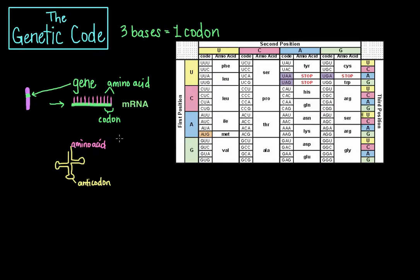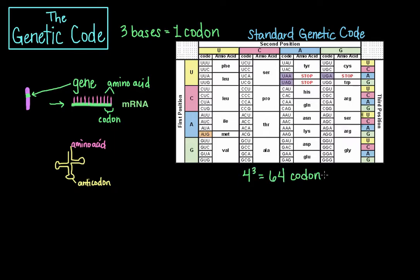The genetic code is highly similar among all organisms, and because the vast majority of genes are encoded with exactly the same code, this particular code is often referred to as the standard genetic code, though there have been some variant codes proposed. With four different bases and possible combinations of three bases at a time, there are 4³ or 64 different codon combinations possible with a triplet codon.